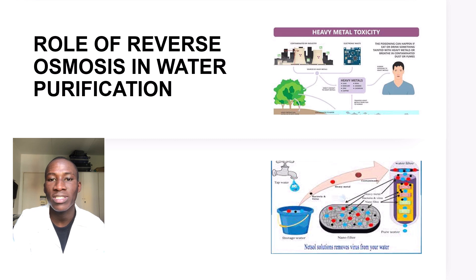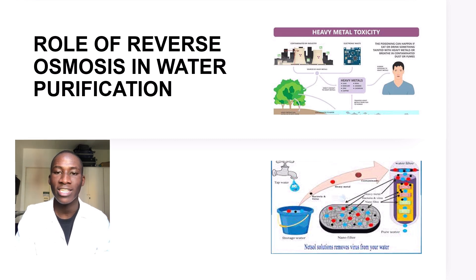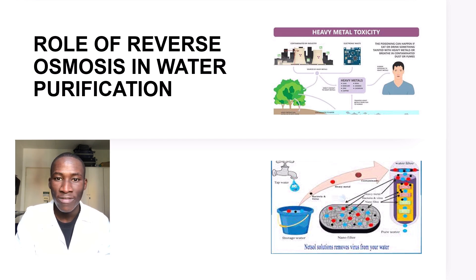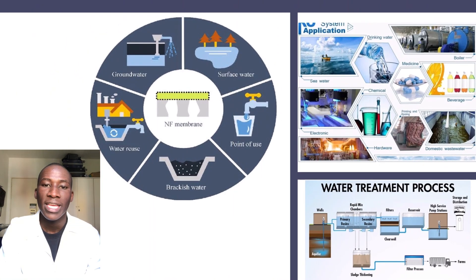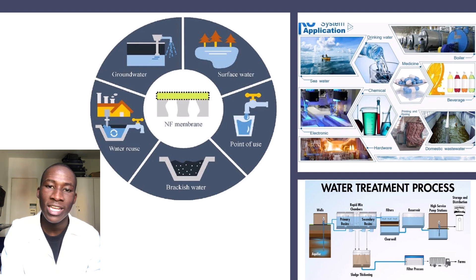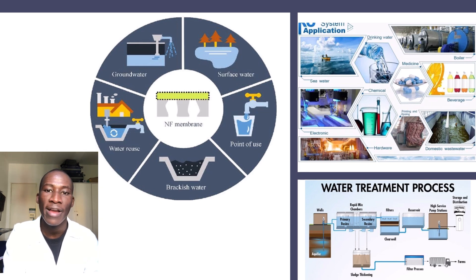The roles of reverse osmosis in water purification include high removal efficiency at removing various contaminants such as dissolved solids, heavy metals and pathogens. It achieves removal of bacteria and viruses and provides purification of different water sources. It is very effective in treating ground and surface water for both large and small flow applications. Applications of reverse osmosis include pharmaceutical, boiler feed water, metal finishing, food and beverage processing.